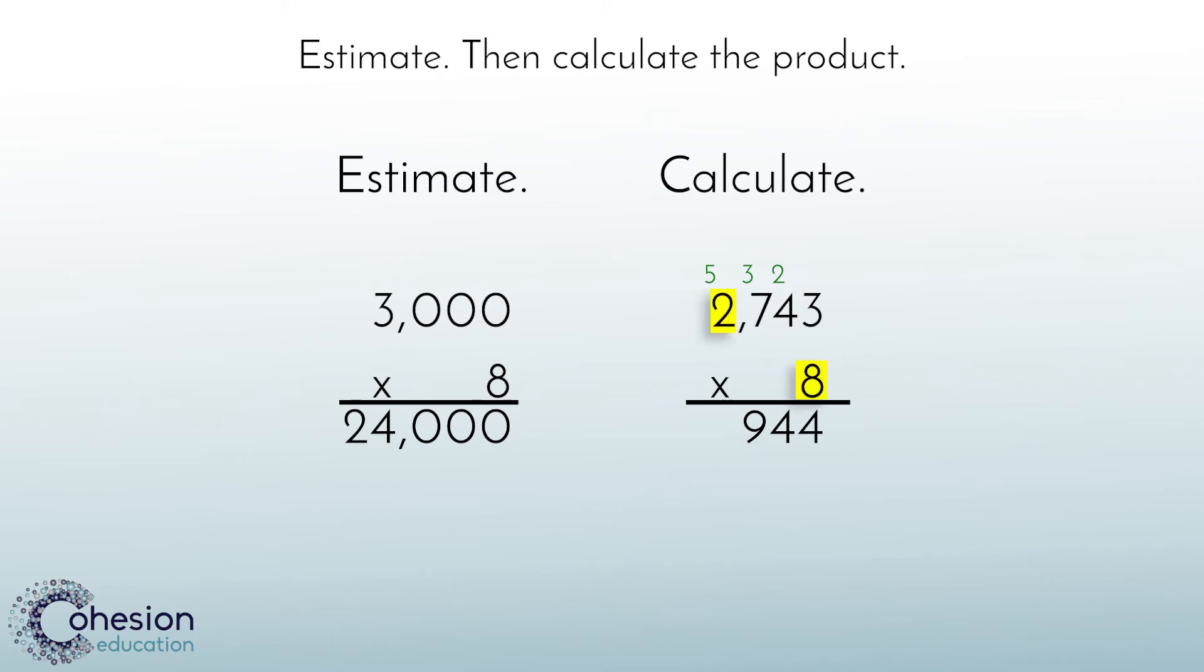Lastly, we will multiply our thousands place using the basic fact 8 times 2, which is 16. Just like the other place values, we will need to add the regrouped thousands. When we add 5 to 16, we get a total of 21 thousands for this place value.